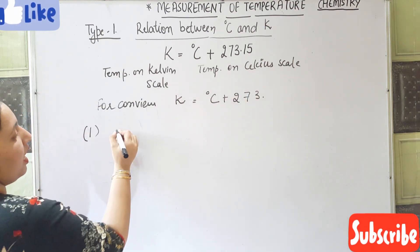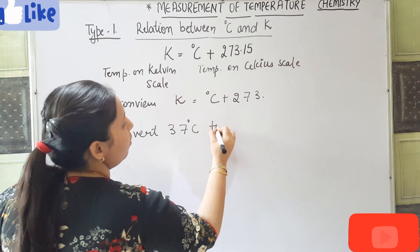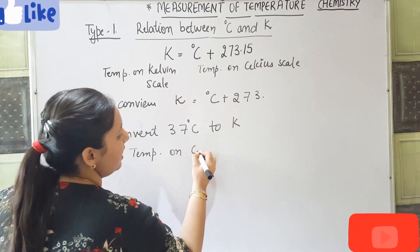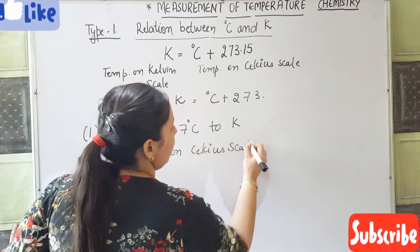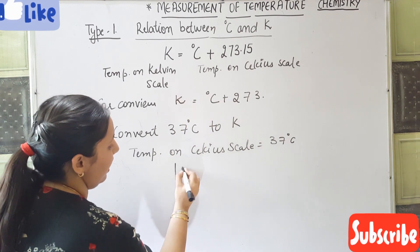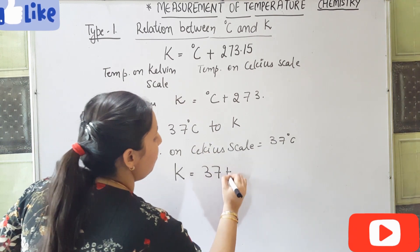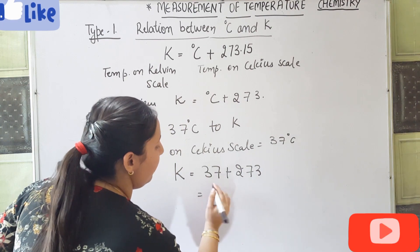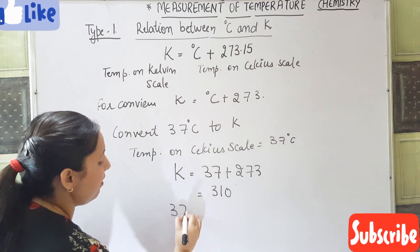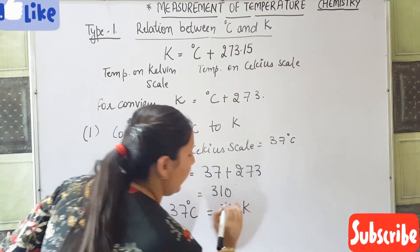Let's take an example: convert 37 degree Celsius to Kelvin. The temperature on the Celsius scale is given as 37°C. To find the temperature on the Kelvin scale, we calculate 37 plus 273, which equals 310. So 37 degrees Celsius is equal to 310 Kelvin.